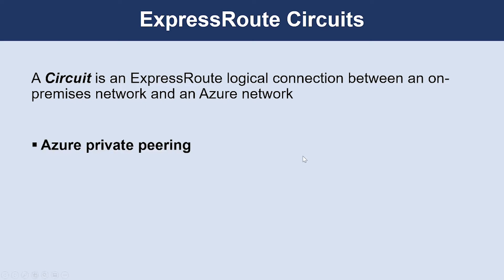First, let's look into Azure Private Peering. Private Peering is a trusted extension of your core network in Azure with bi-directional connectivity. By using the peering method, you can connect to virtual machines and cloud services directly on their private IP addresses. Second is Microsoft Peering. Microsoft Peering provides connectivity to all Microsoft online services — Office 365, Dynamics 365, and Azure Platform-as-a-Service. This model requires a public IP address owned by you or your connectivity provider, which adheres to a set of predefined rules.